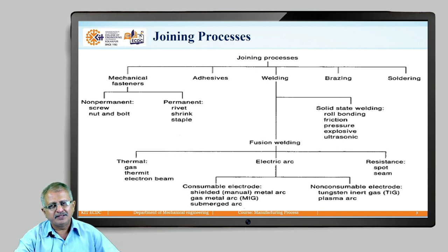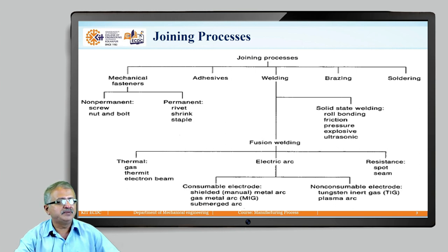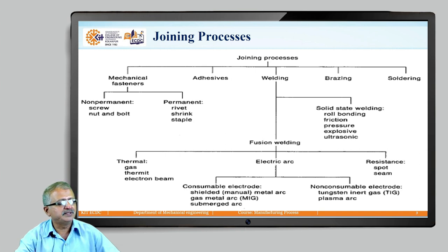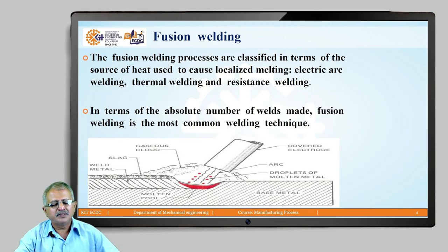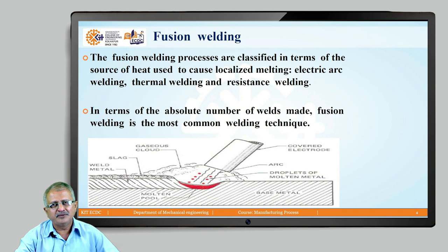Electric arc welding is again categorized based upon the type of electrode used in welding. One category is consumable electrodes, upon which different types of electric arc welding processes are based. The second category is processes which deploy non-consumable electrodes. Fusion welding uses heat to carry out localized melting.